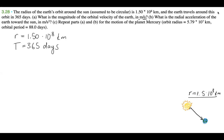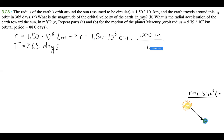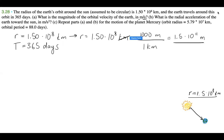Since part A asks for orbital velocity in meters per second, we have kilometers and days, so let's do the unit conversion now to get it out of the way. For R: 1.50 times 10 to the 8 kilometers, multiplied by 1000 meters per kilometer, gives us 1.50 times 10 to the 11 meters.